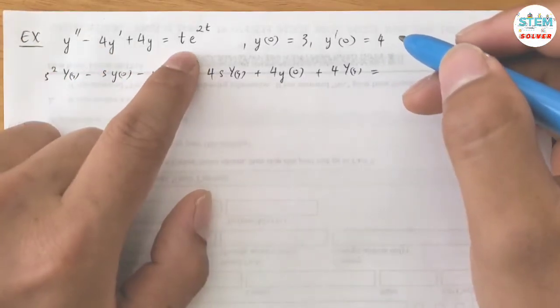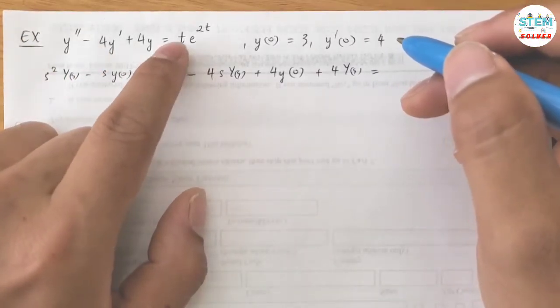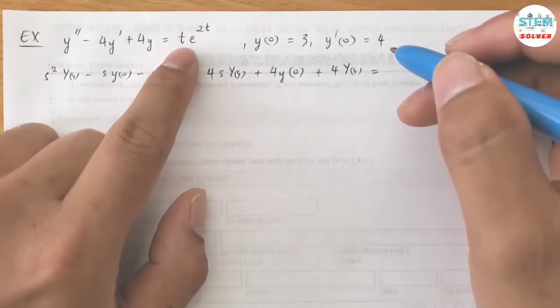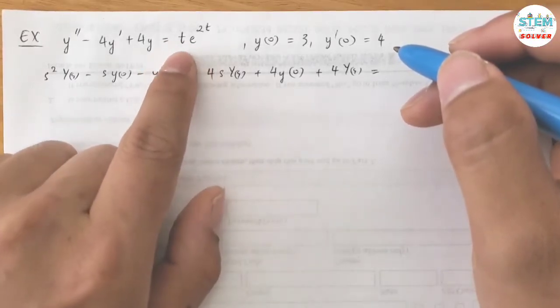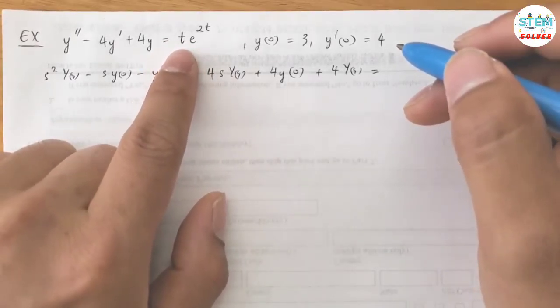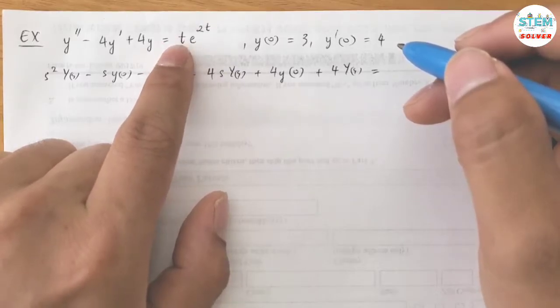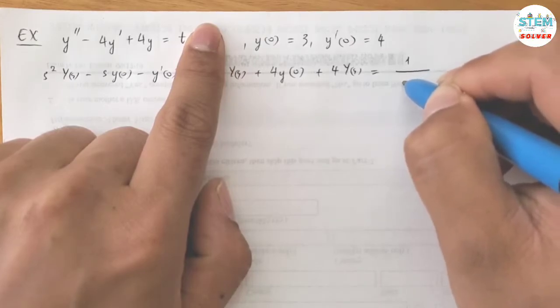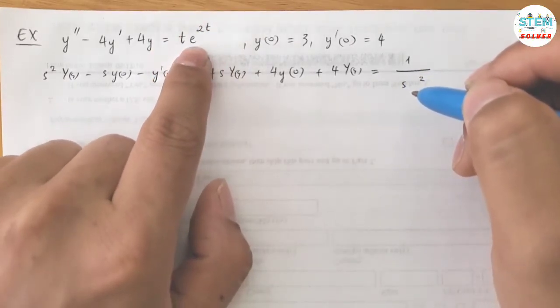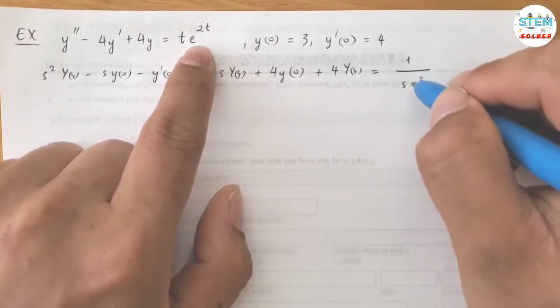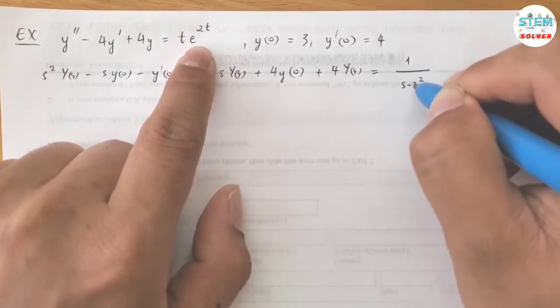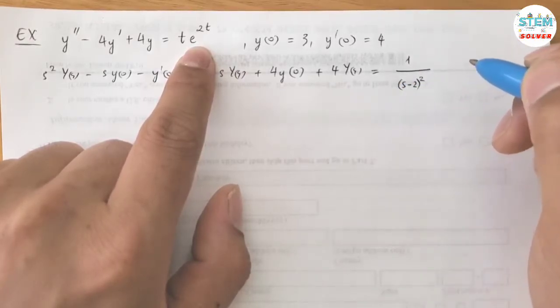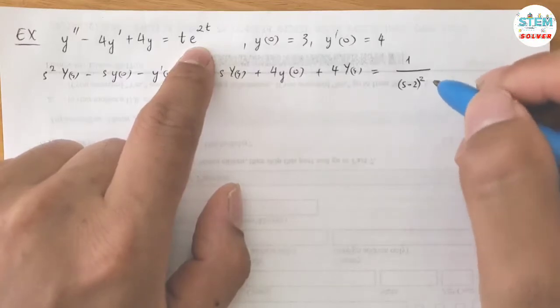So for this one, be careful with this one. You'll notice you have t and e to the t, so which function you're gonna take the Laplace transform? So we're gonna take the Laplace transform of t. That gives me 1 over S squared, but because you have e to the 2t, which is the shift, that means you're going to have S minus 2 squared.